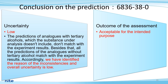This is our overall conclusion. Uncertainty is low and the outcome of this assessment is acceptable for the intended purpose. As our comment, the predictions of analogs with tertiary alcohols don't match with the experiment results. Accordingly, we have identified the reason for the inconsistencies and the overall uncertainty is low.